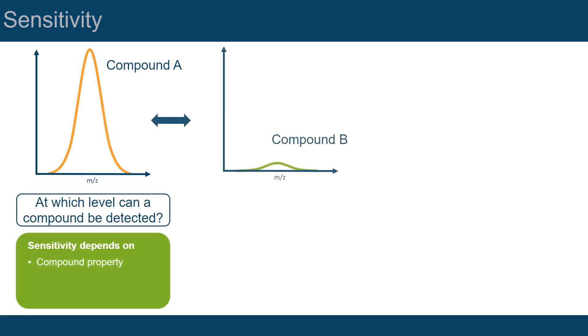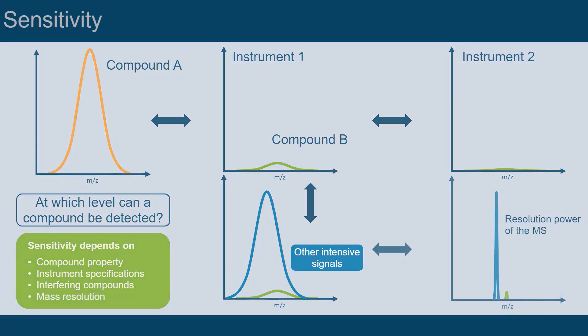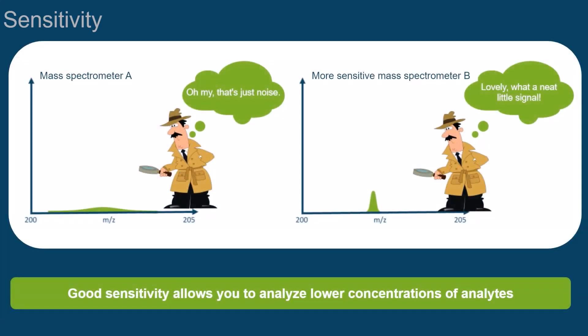for example, the molecular property, the technical specification of the mass spectrometer itself, how many other molecules with similar mass are in the sample, or its mass resolution. Good sensitivity allows you to analyze lower concentrations of analytes.